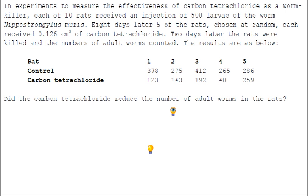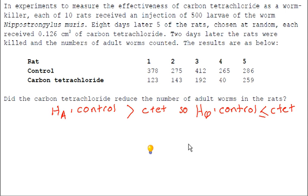First thing we need to do is to state the hypotheses. Now the idea is that the carbon tet will kill the parasites so we would be hoping that the control will have more parasites than the carbon tet. The alternative to that is that the carbon tet is ineffective so the control treatment has the same number of worms as the carbon tet or perhaps even fewer.